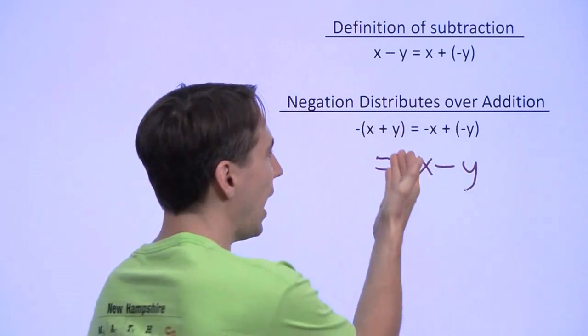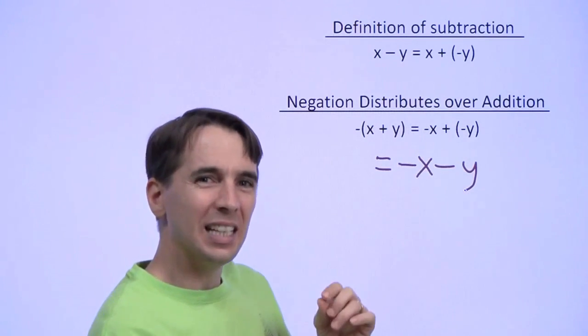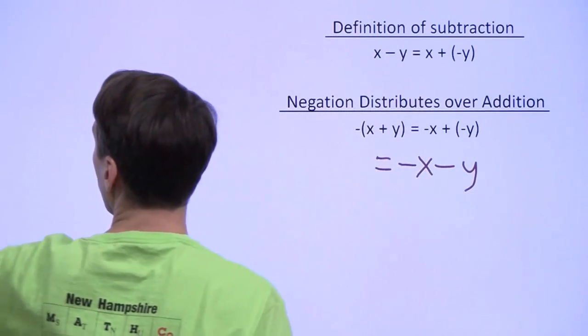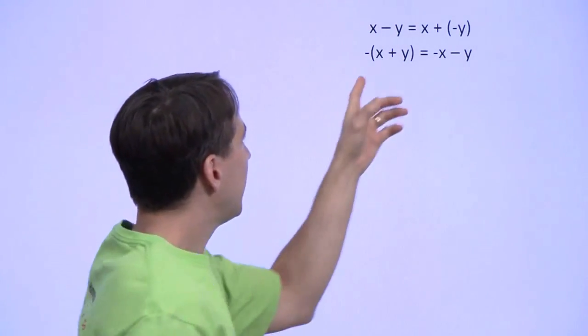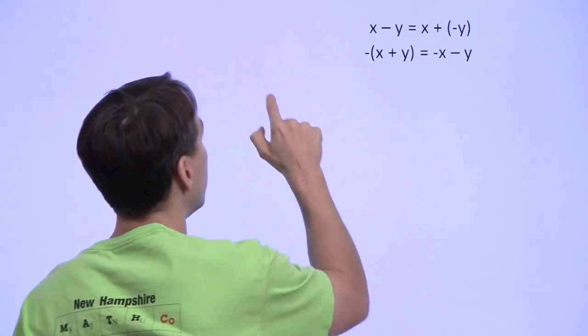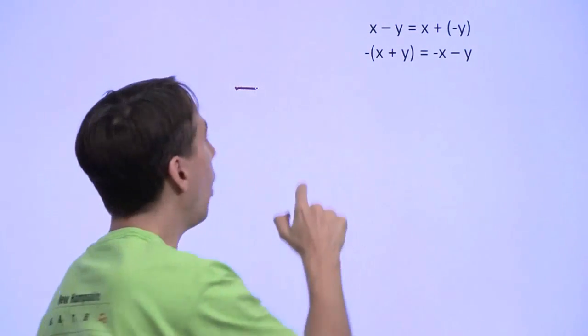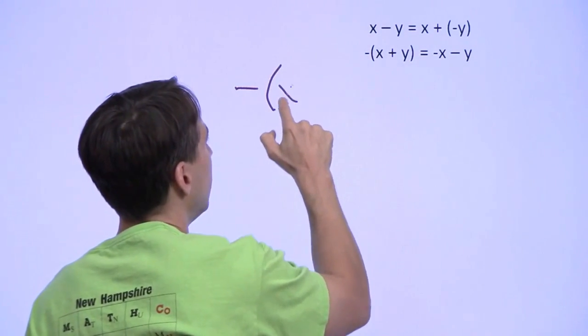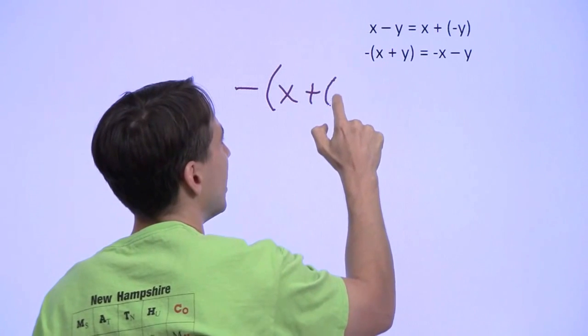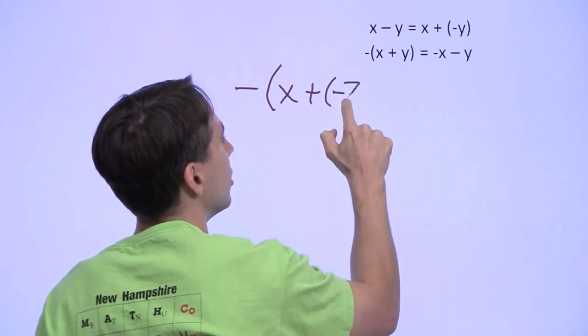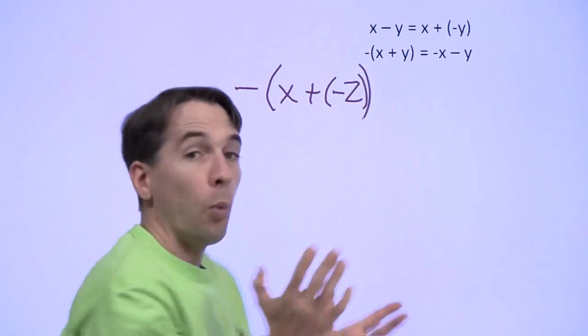But now I want to take a look at what happens here when we stick a negation in for y. Let's take a look at that. And what I mean by that is if I start here, and instead of having a plus y, I put in a plus the negation of z. What happens?